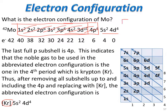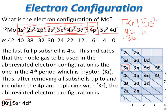Writing out that designation, we put krypton in the brackets. Knowing that krypton is element 36, out of the 42 electrons we can remove 36, which leaves 6 more to place. Since molybdenum is in the fifth period, we start with the 5s. We put two electrons in the 5s, then follow the next diagonal to the 4d. Since there are four electrons left, we put those in the 4d subshell, completing the abbreviated electron configuration.